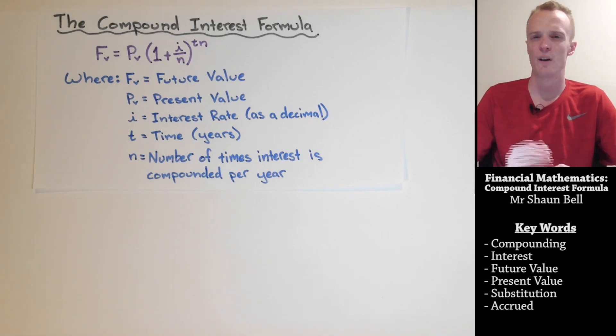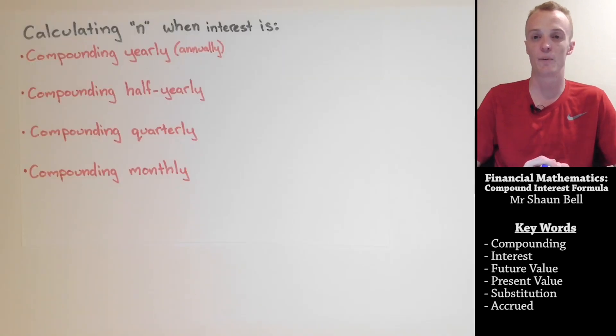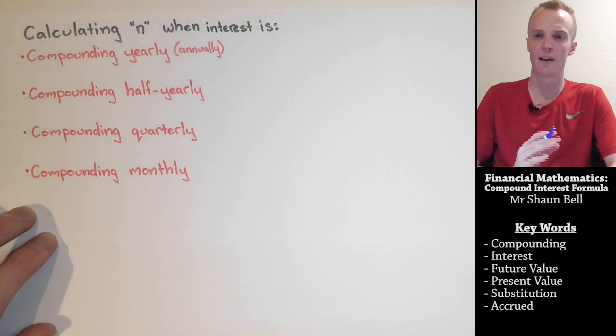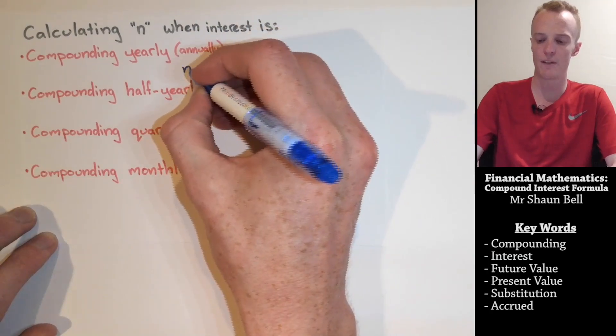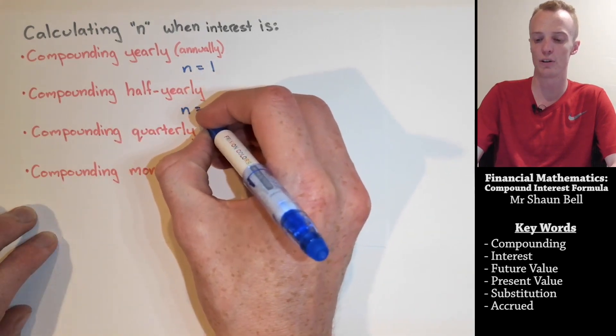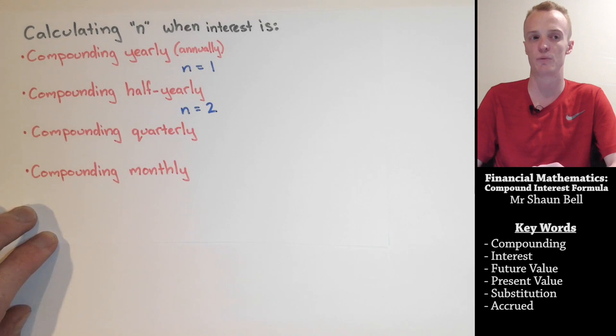Now, before we go any further, we're going to have a look at how we find what the n value is. If we want to find out what the n value equals, we need to calculate how often the interest is applied or the interest compounds inside a one year period. So, when the interest is compounding yearly, this is saying that the interest is going to be applied once per year, so our n value here is going to be equal to one. When it's compounding half yearly, it's going to be compounding every six months, which means that it's going to compound a total of twice, so our n value is equal to two.